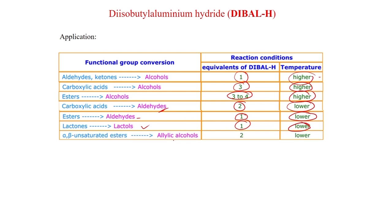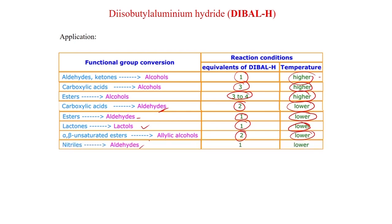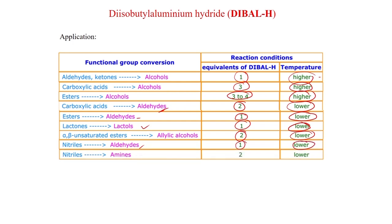Alpha-beta unsaturated esters to allylic alcohols use 2 equivalents of DIBAL-H. This is an important reaction because with LiAlH₄ you cannot carry out this reaction — the double bond would be reduced. With DIBAL-H, this is very selective; the double bond is untouched and the reaction proceeds at lower temperature. Nitriles to aldehydes is also an important reaction and can be stopped at the aldehyde with only 1 equivalent of DIBAL-H at lower temperature. Nitriles to amines use 2 equivalents of DIBAL-H.